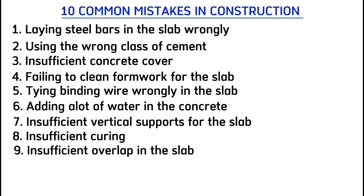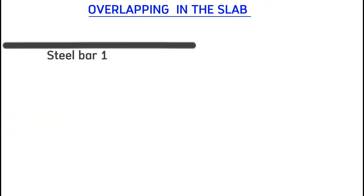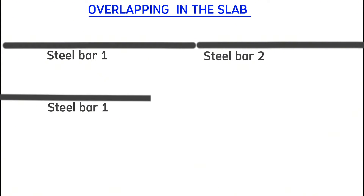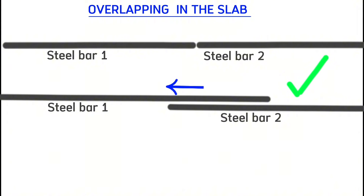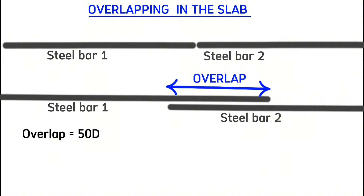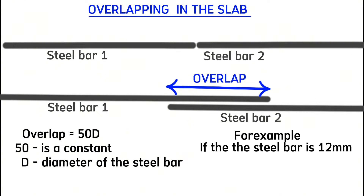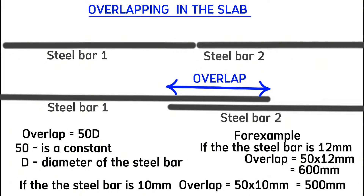Common mistake number nine is insufficient overlap in the slab. Most steel fixers simply add one bar end-to-end with another, which is wrong because it causes cracks. The correct version is to have the next steel bar begin before where the previous one ends, creating an overlap. We determine this overlap by the formula: overlap equals 50d, where 50 is the constant and d is the diameter of the steel bar. For example, if the diameter is 12mm, overlap equals 50×12 = 600mm. For a 10mm bar, overlap equals 50×10 = 500mm.